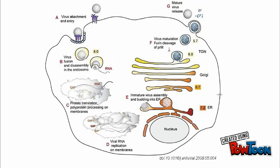Protein translation and polyprotein processing then takes place in the membranes of the cell on the RNA strands. The viral RNA then replicates to produce more identical RNA strands. The mature virus then assembles and buds into the endoplasmic reticulum.